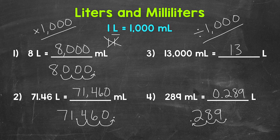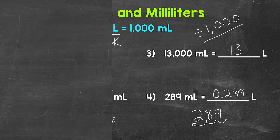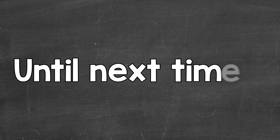So there you have it — that's how you convert between liters and milliliters. When we go from liters to milliliters, multiply by 1,000, and do that by moving the decimal three times to the right. When we go from milliliters to liters, divide by 1,000, and do that by moving the decimal three times to the left. I hope that helped. Thanks so much for watching. Until next time, peace.